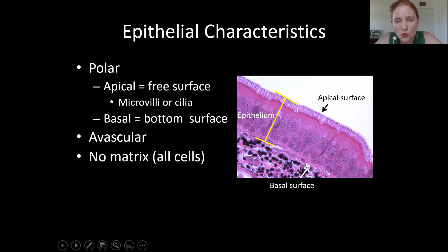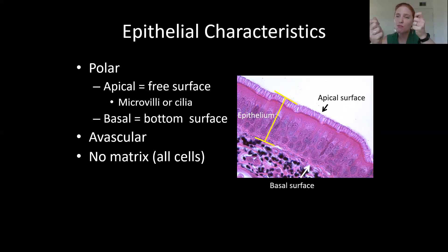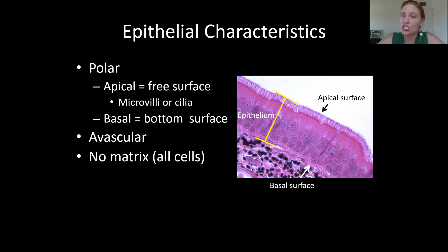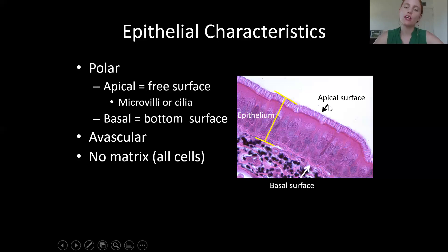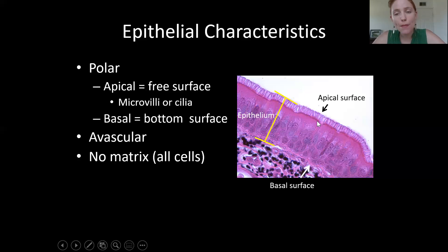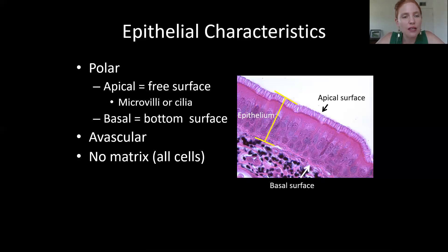The top of an epithelial tissue is called the apical surface — like apex, the top of a mountain — and the bottom is called the basal surface, like base. So we have the apical surface on top and the basal surface on the bottom. Next characteristic: epithelial tissues are avascular.